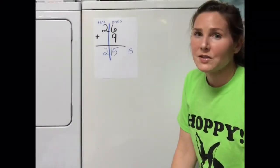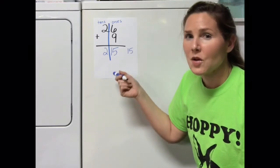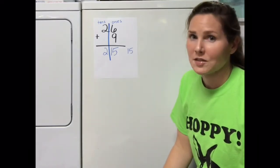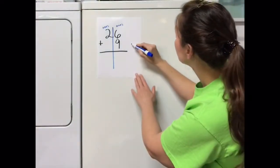Hopefully you're able to see by using the hundreds chart that this is definitely the wrong answer. So let me show you how to get the right answer. As I said earlier, 6 plus 9 is equal to 15.